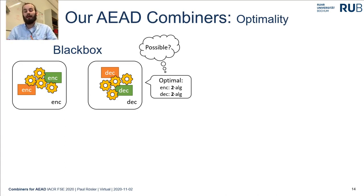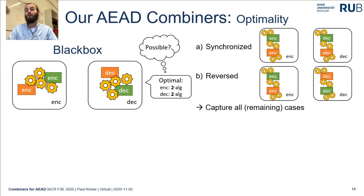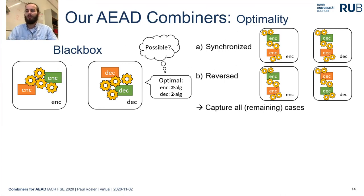In order to analyze this we consider all possible variants to combine AEAD schemes, categorized into two cases: synchronized combiners, which invoke both underlying AEAD schemes in the same order on encryption as their decryption algorithms are invoked in combined decryption; and reversed combiners, where the encryption order in combined encryption is the reverse of the decryption order. All remaining cases of combinations can be reduced to either of these two cases.